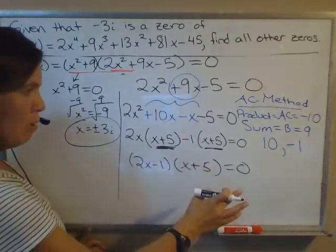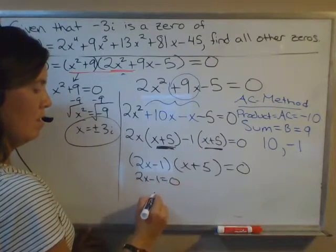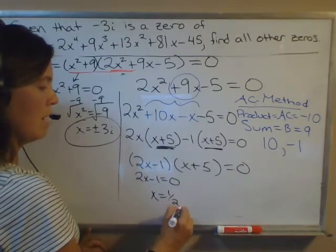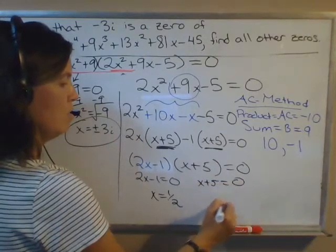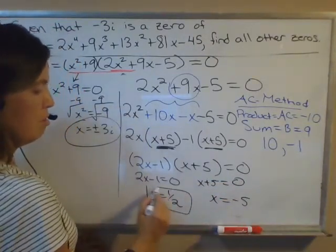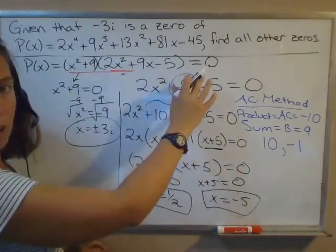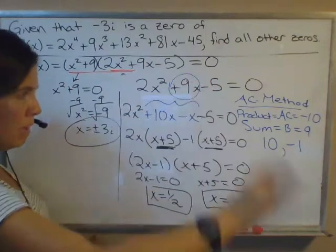The remaining zeros we get by setting each of these factors equal to 0. This will give you x = 1/2. x + 5 = 0 gives you x = -5. So we just found all the zeros of this pretty large polynomial completely by hand.